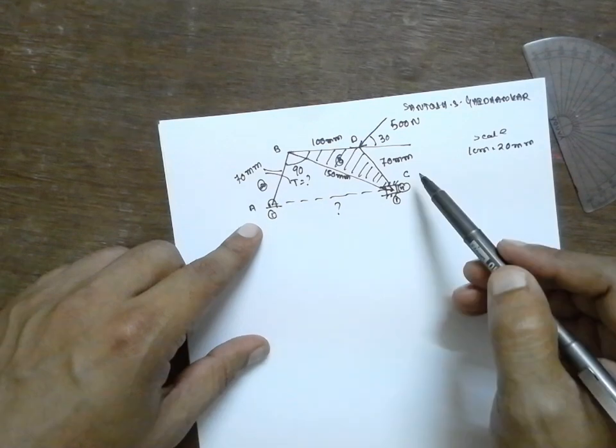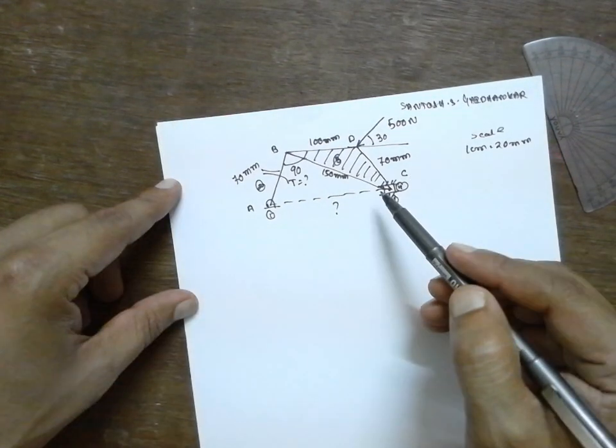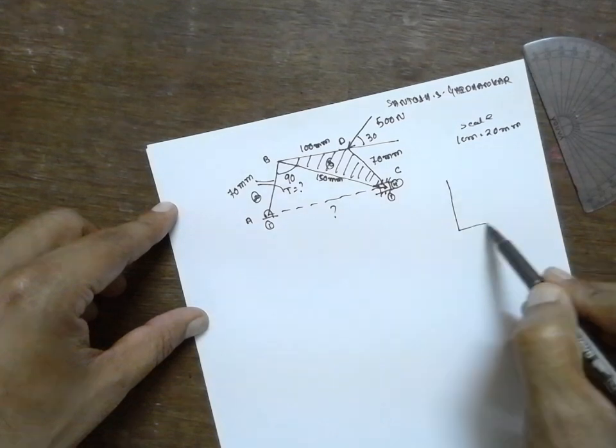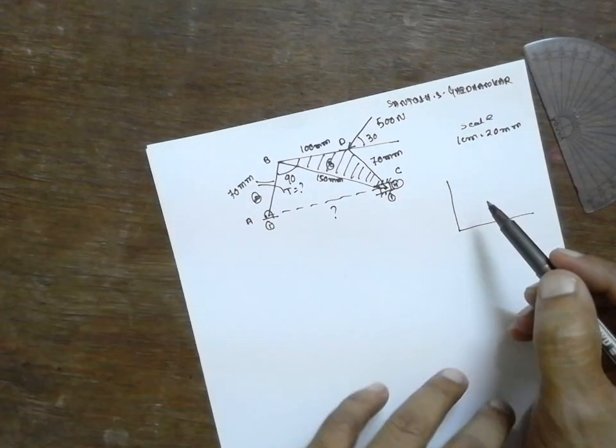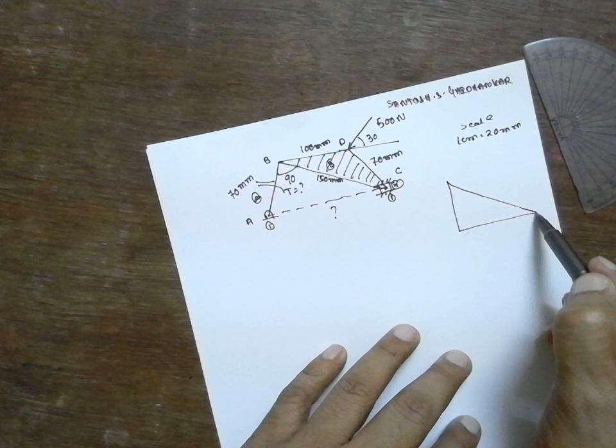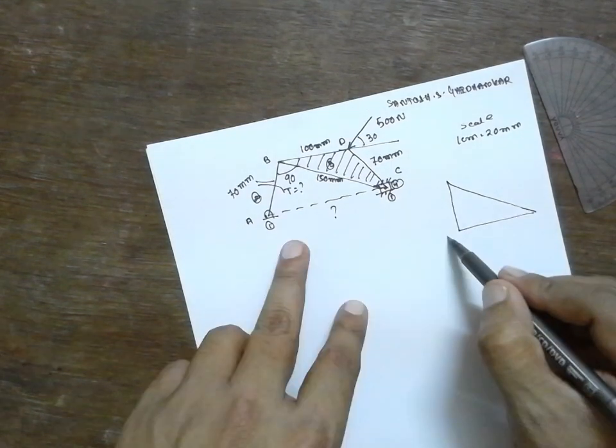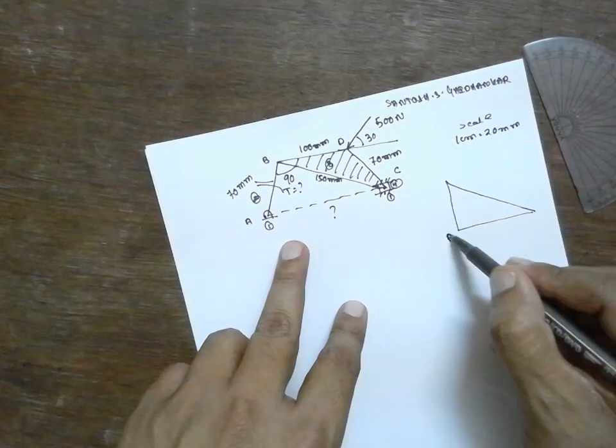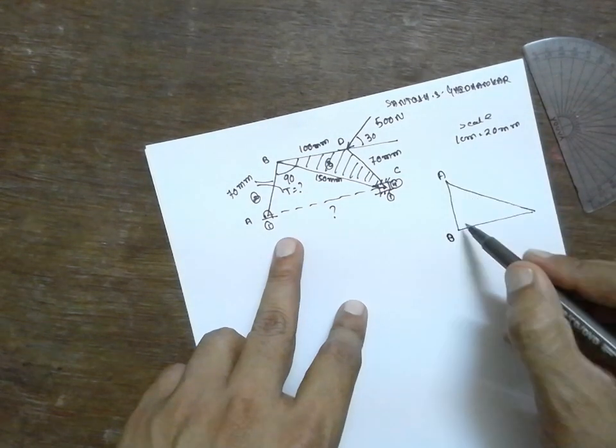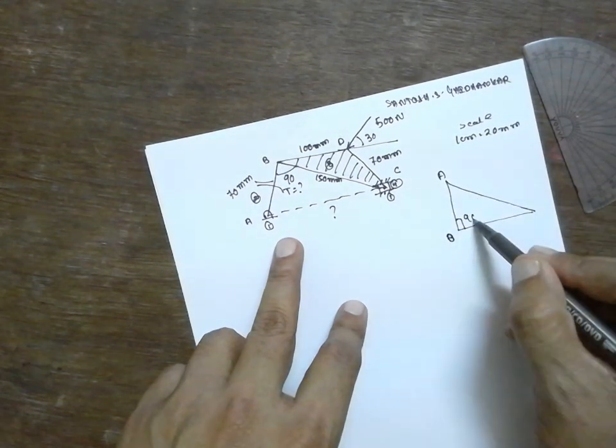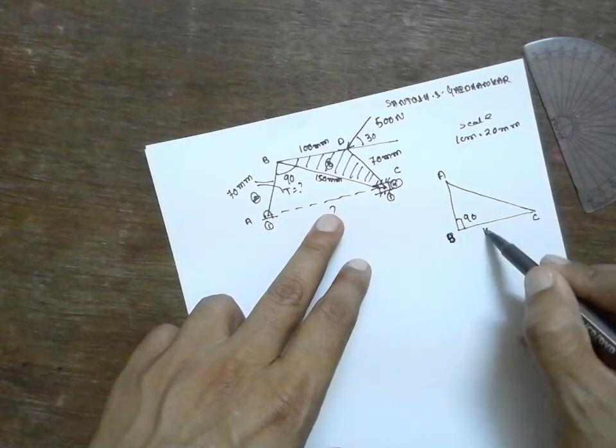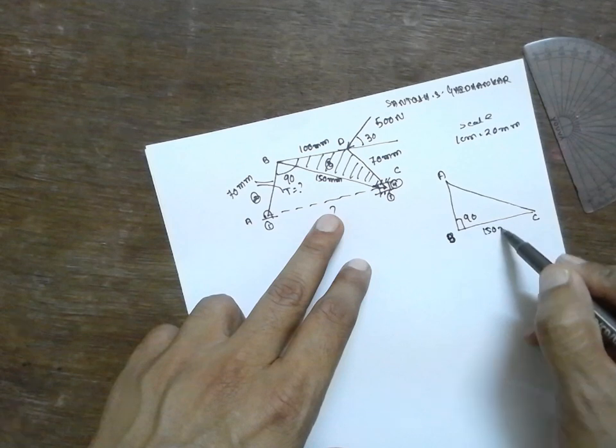I will draw a line here. Right angle triangle. This is A. B. Sorry, this is B. This is A. 90 degree. B. BC is nothing but 150 mm. This is 70 mm. This is the question mark.